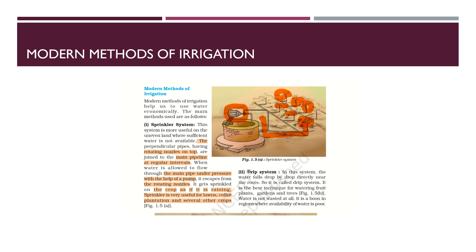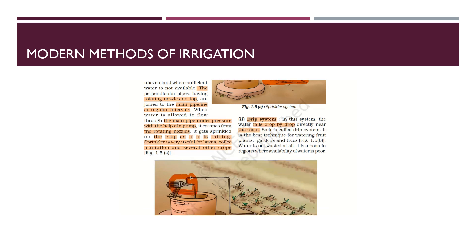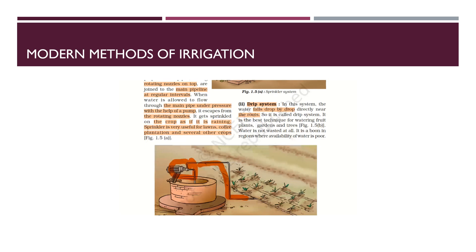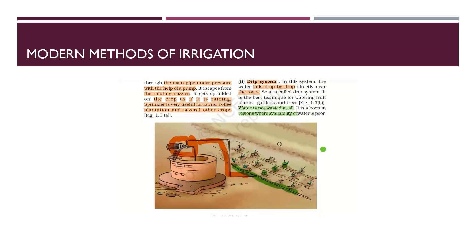Next comes the drip system. The drip system is also used in places where water is scarce. Water falls drop by drop, which is why it is called the drip system. The pipelines are placed near the roots of the plants, and they deliver water drop by drop directly to the roots. Water is not wasted at all, making it a boon to regions where the availability of water is very poor.